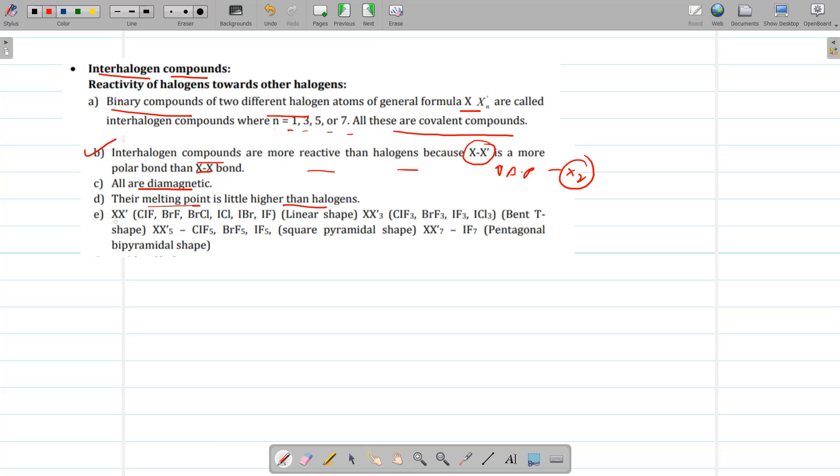Then, they can form a compound of XX', for example ClF, BrF, etc. And all of them, they are having linear shape. Then, there is a type XX3, for example ClF3. They have bent T shape. For example, in case of ClF3, Cl is in the center. It is forming three fluoride bonds and there will be two lone pair of electrons. So its shape is T shape.